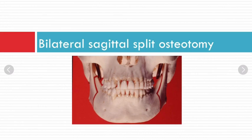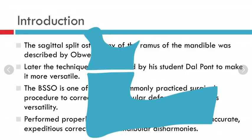We need bilateral sagittal split osteotomy to either protrude or retrude the jaw. This picture is of standard BSSO. If you cut the mandible through and through and take it forward or backward, there won't be any contact between the two bone segments — just edges in contact. This leads to complications like non-union and muscle pull. The first approach tried was a horizontal cut on the ramus, but it wasn't successful.